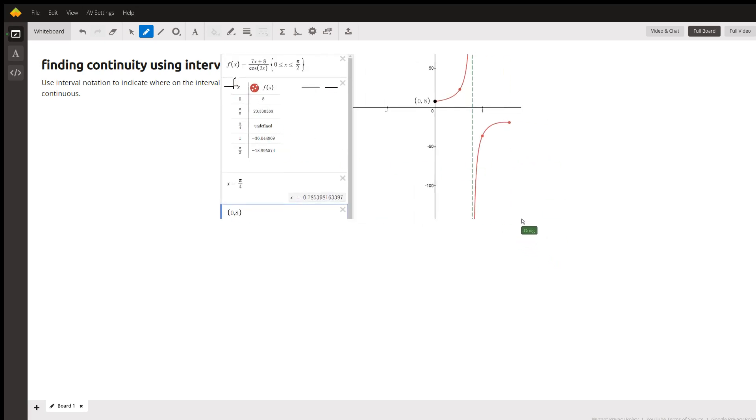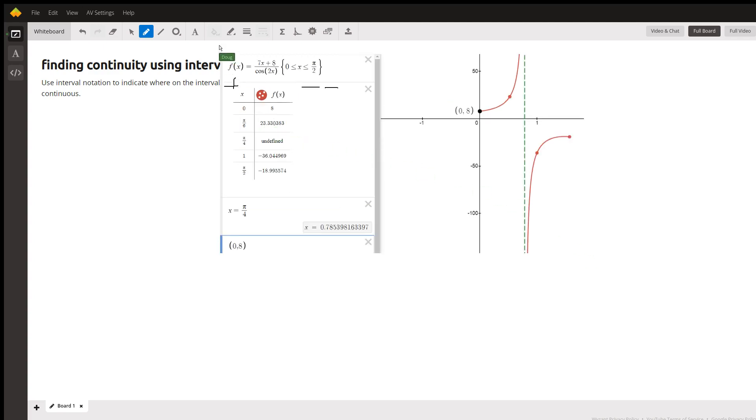Looking at this table, it appears that π over 4 is where we have a problem. This numerator never has a problem - you can put any number you want in there for x and the numerator will be defined.